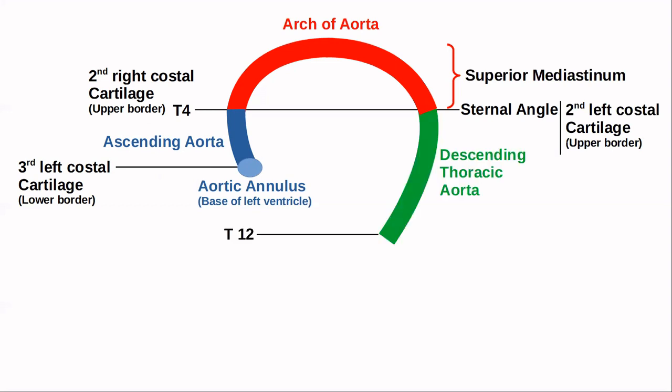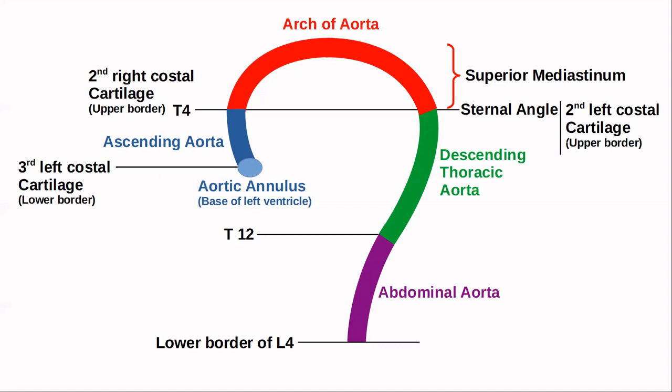From T4 to T12 is the descending thoracic aorta, descending downwards. At T12 it crosses the diaphragm and becomes the abdominal aorta, extending up to the lower border of L4. The abdominal aorta ends by dividing into the right and left common iliac arteries.